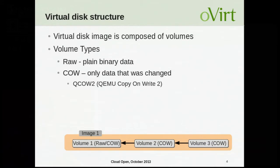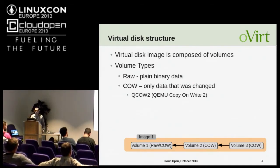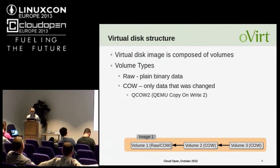Now let's talk about volumes. A virtual disk is composed of elements that can be either files or block devices, depending on the storage type that stores its data. Those elements are called volumes. There are two volume types in oVirt. Raw volumes — the simplest format, containing plain binary data. And COW volumes — specifically QCOW2, which stands for QEMU Copy-on-Write version 2. A COW volume contains only part of the data, only data that was changed.